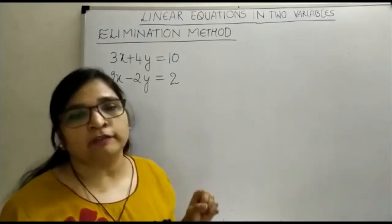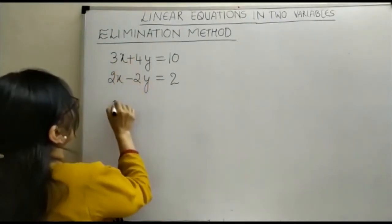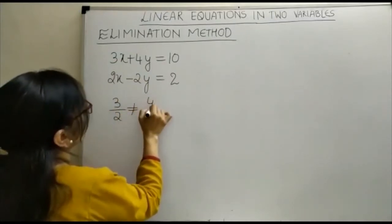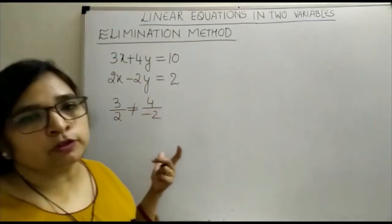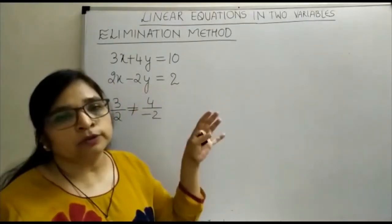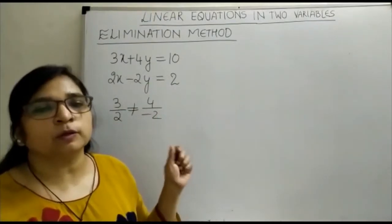So let us see whether the given equation is having the unique solution or not. You can see here 3 upon 2 is not equal to 4 upon minus 2, therefore unique solution exists and so we can proceed to see how this elimination method is applied for the given pair of linear equations in two variables.